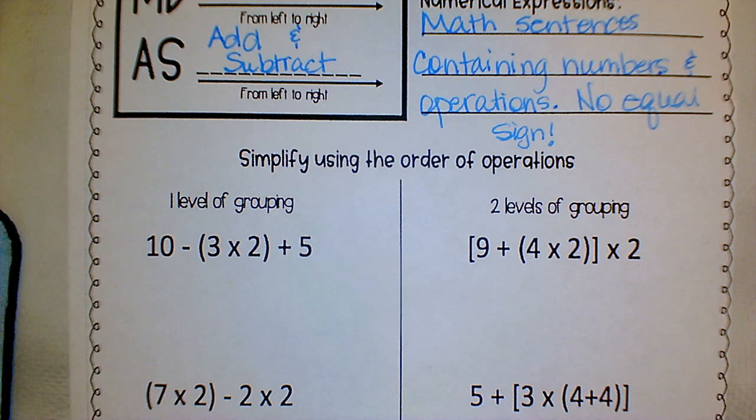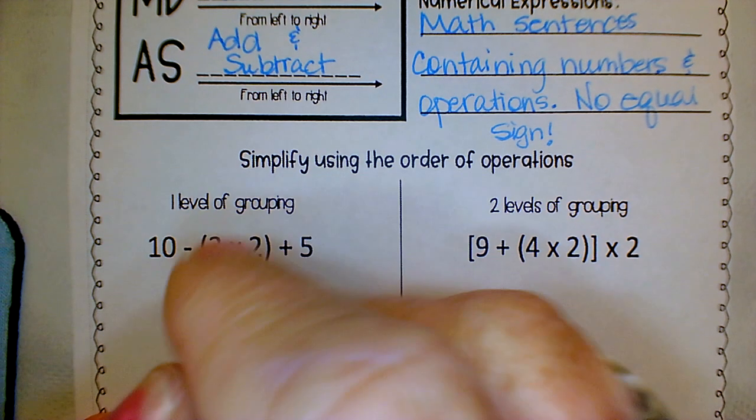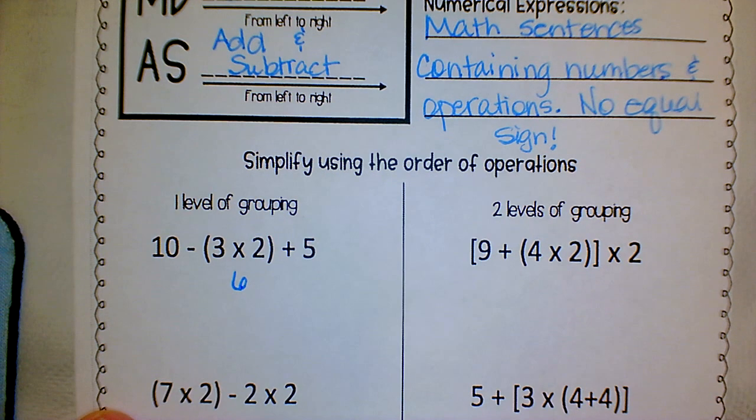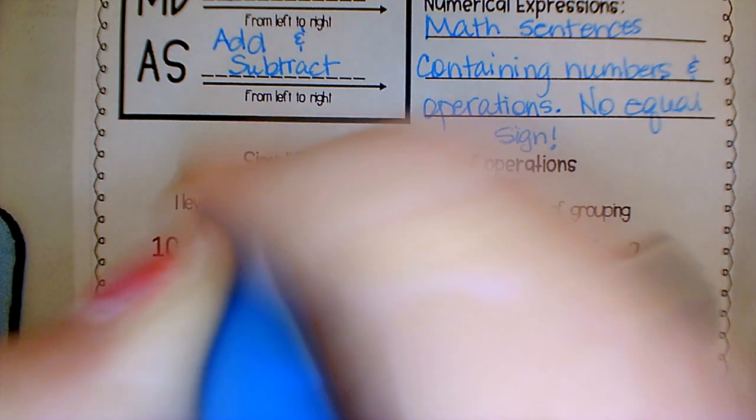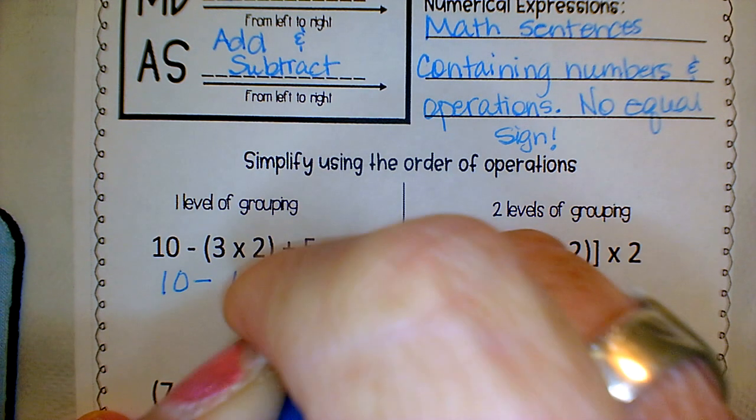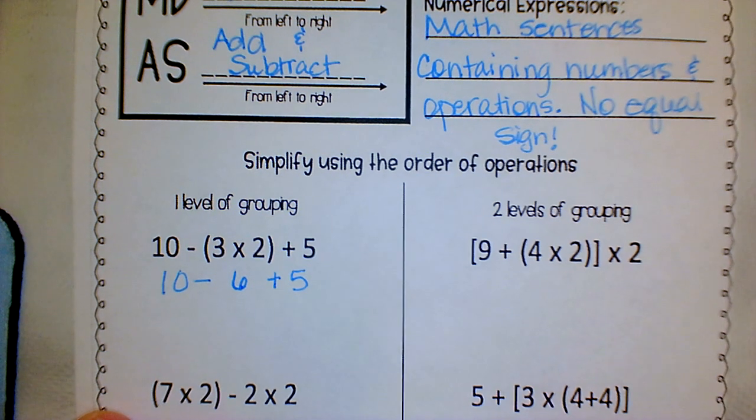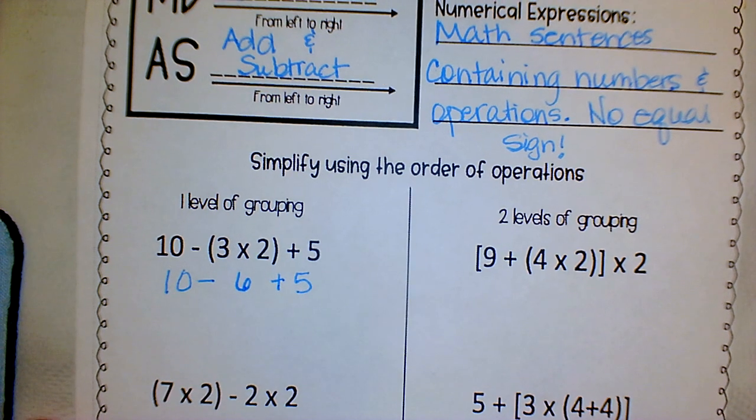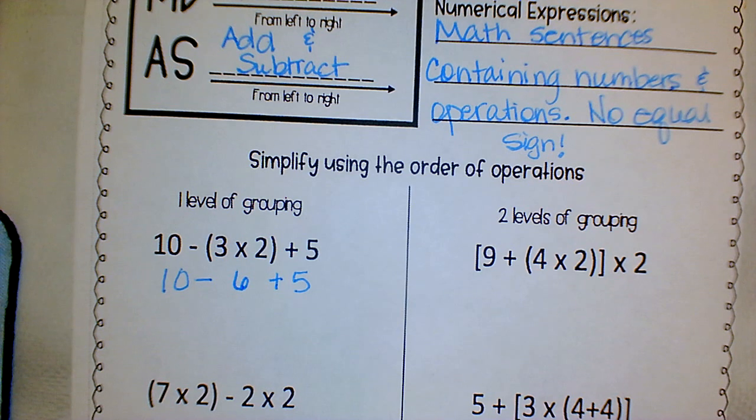What goes first, Trista? Parentheses. So what is three times two? Six. So just like in the rap, you're going to put that under your grouping and then you're going to rewrite it as a new expression. This way you stay in order and you can follow the order of operations.